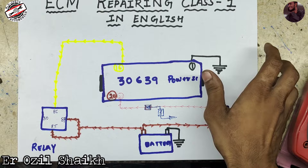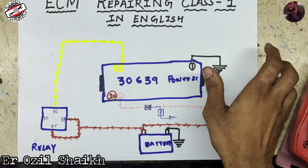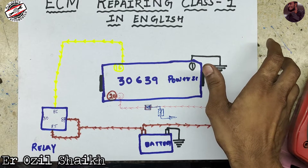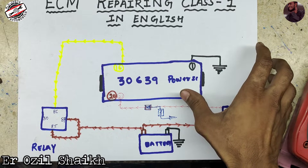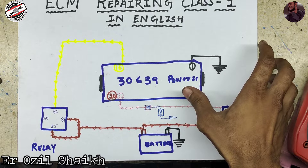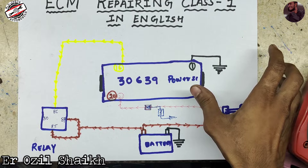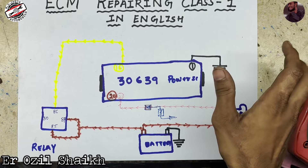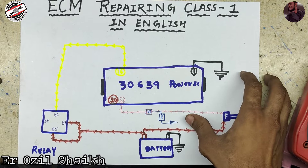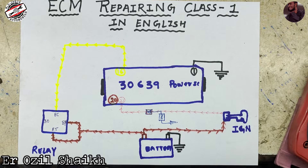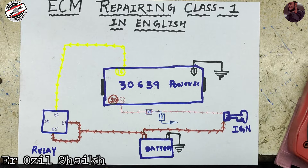Here I have an IC 30639. This IC is commonly used in Bosch ECM for power supply — it's also called a power IC. Many people use different names like power IC, driver IC, or supply IC, but the commonly used name for this IC is power IC.